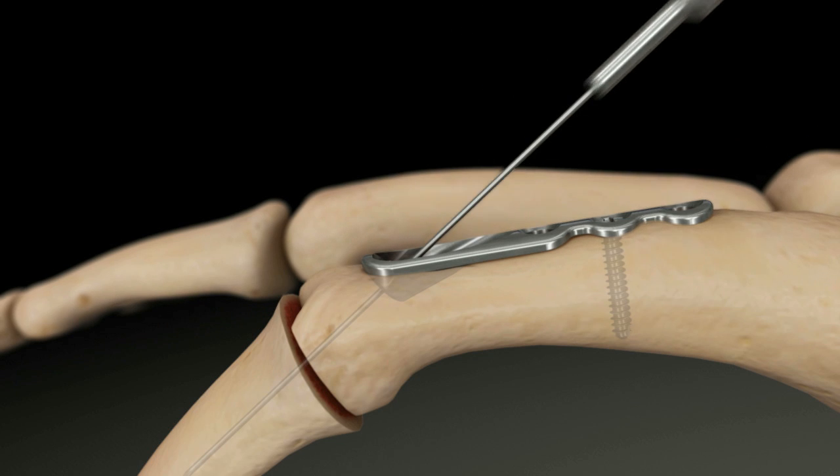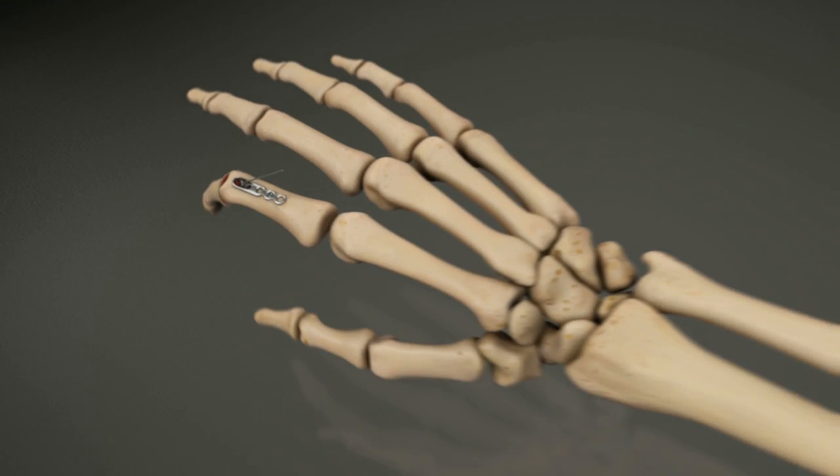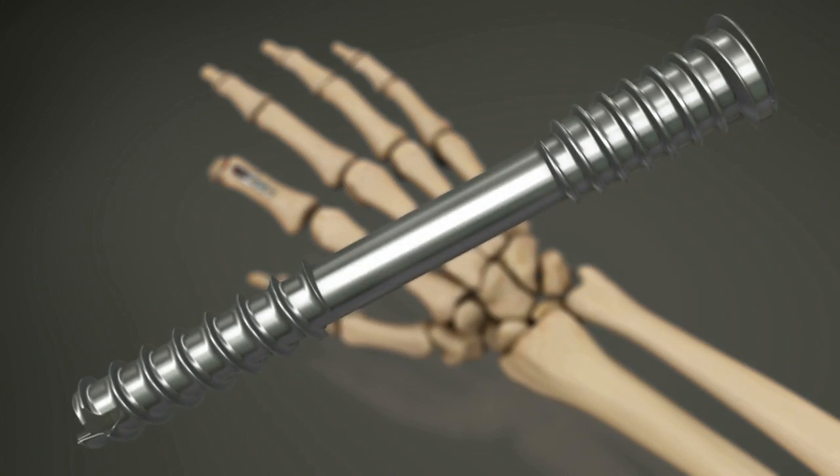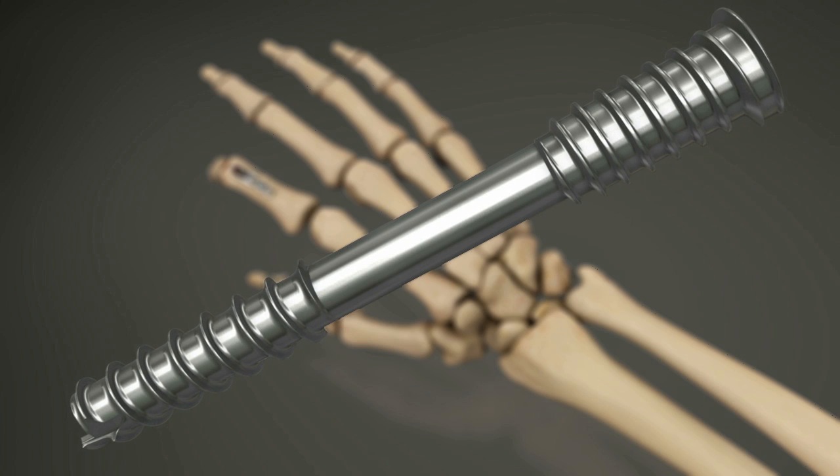Reference the length measured and place the appropriate fusion screw. This screw is cannulated and will lock into the plate when fully tightened.